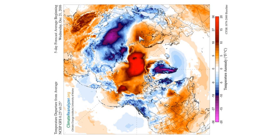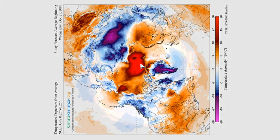These temperature anomalies reflect what's going on with the jet stream, where you saw a lot more meridional flow — where you had warm air coming up into the arctic, and then cold air coming down over Siberia. This isn't to say that the changes we're seeing are caused directly by the polar vortex; it's just to indicate that there's a correlation between what's going on with the polar vortex and what's going on down in the troposphere with the weather.